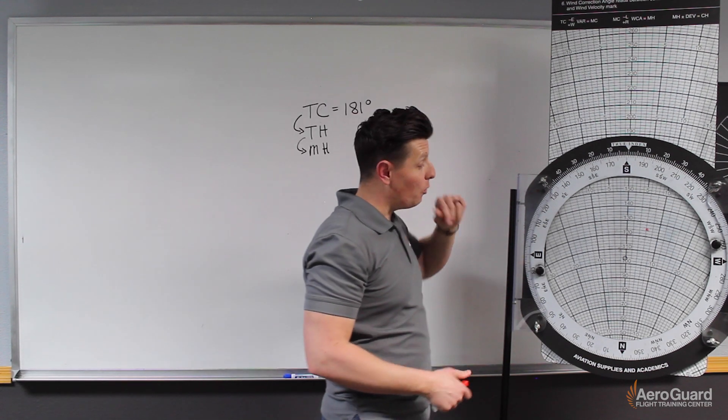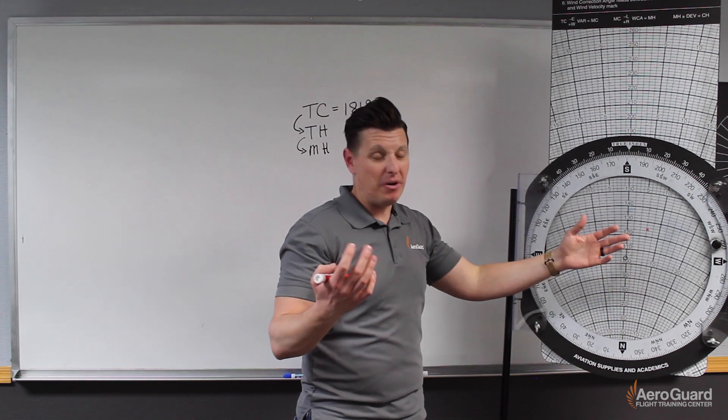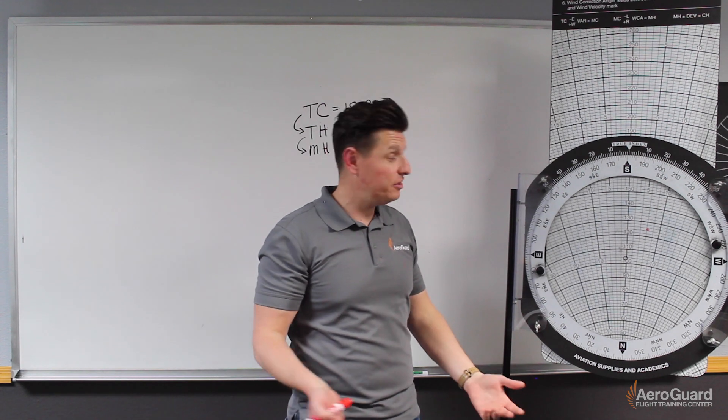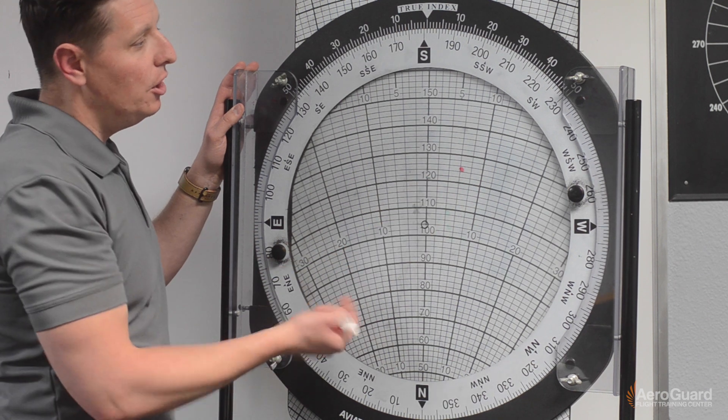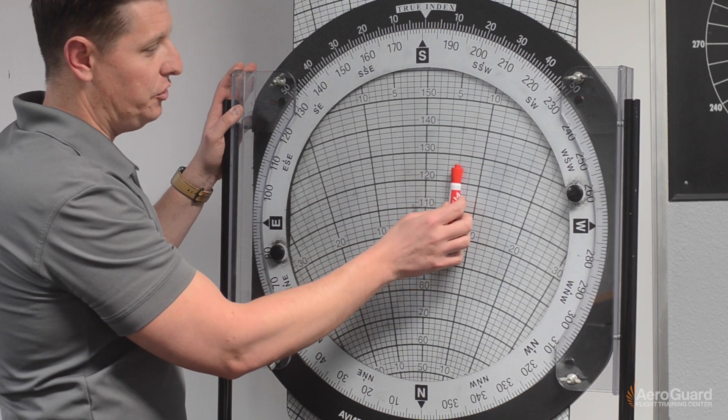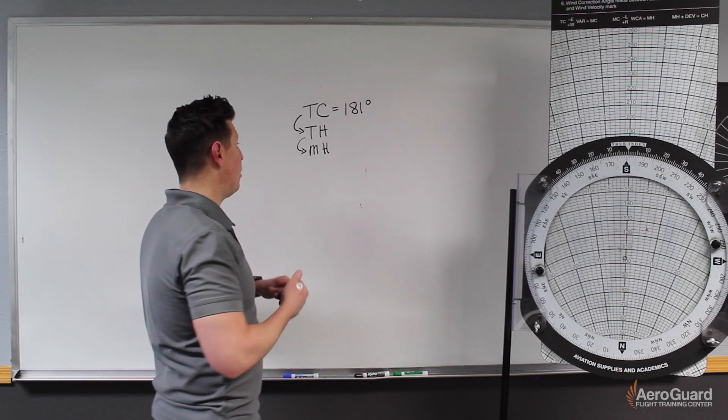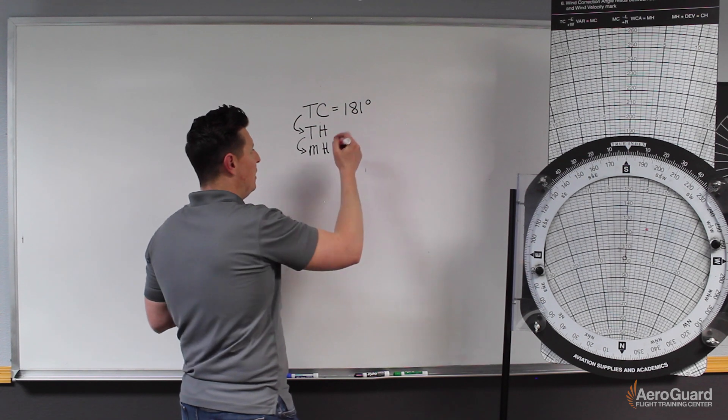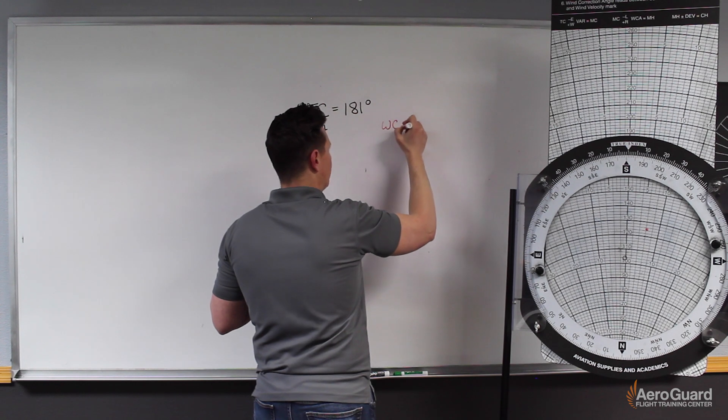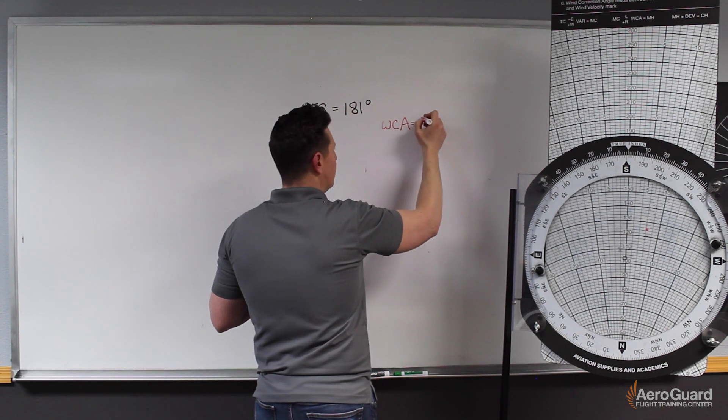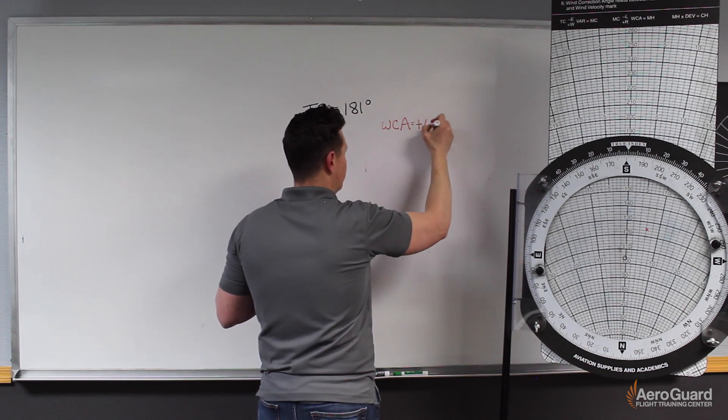Our final steps are we could read our ground speed from under the center, but in this case, it's sort of irrelevant to the purpose of our question. What's more important is our wind correction angle. So we see our wind correction angle is approximately 6 degrees to the right. So what I will do then is come back over here, and I know that for our true heading, we have a wind correction angle—I'll abbreviate it as WCA—that is 6 degrees to the right, so that means it's a positive 6 degrees.